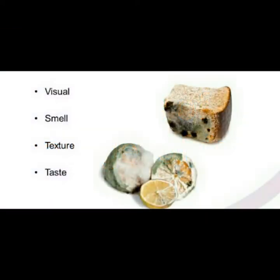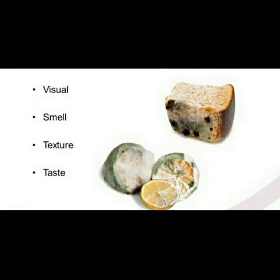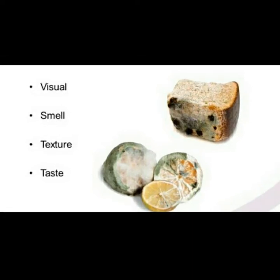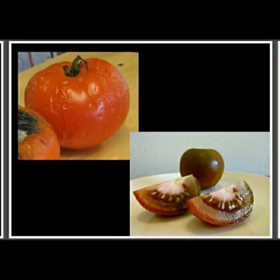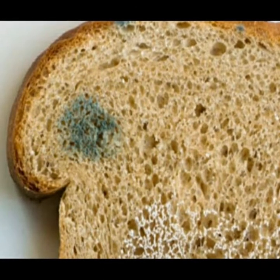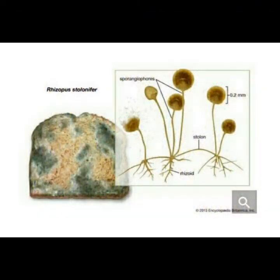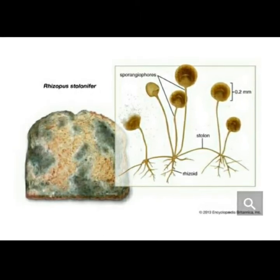There are four visible signs of food spoilage. First, visual — you can see that the food is spoiled. Second, smell — the food gives an unpleasant or foul smell. Third, texture — the food usually becomes soft. Fourth, taste — the taste gets spoiled too. You can see a fresh tomato and a spoiled tomato for comparison. On a loaf of bread, greenish and whitish spots indicate the growth of fungus, such as Rhizopus, also known as black bread mold.